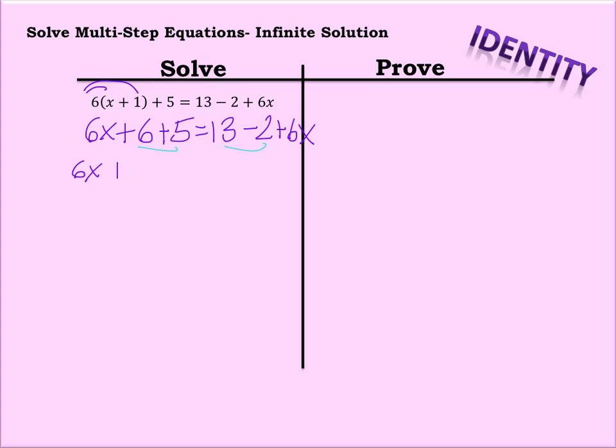We're going to leave the 6x alone, combine 6 and 5, and combine the 13 and the 2.